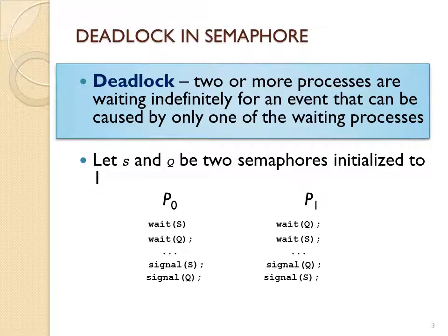A deadlock can occur with semaphores. If you look at this example, process P0 is waiting and changes the value of S to 0, but then P1 changes the value of Q to 0. Then P0 is stuck waiting on Q and P1 is stuck waiting on S. They are both waiting on each other and will not be able to signal. This can happen if semaphores are not set up very carefully.